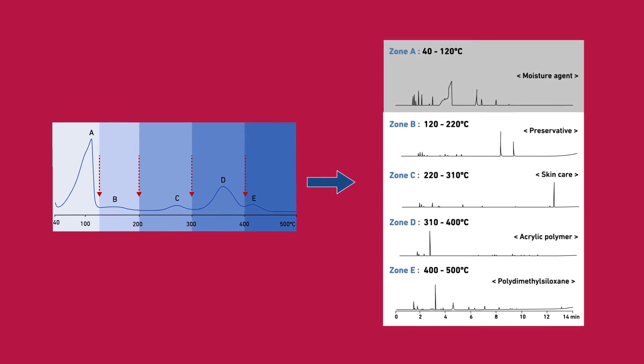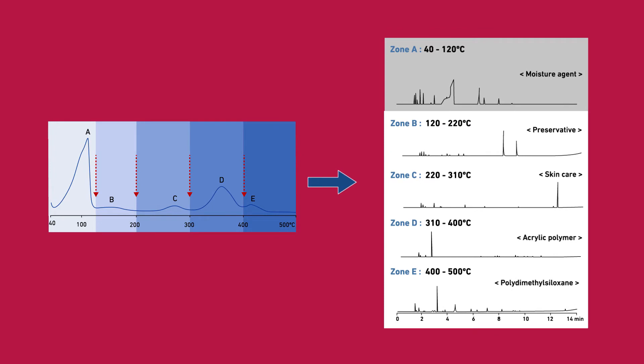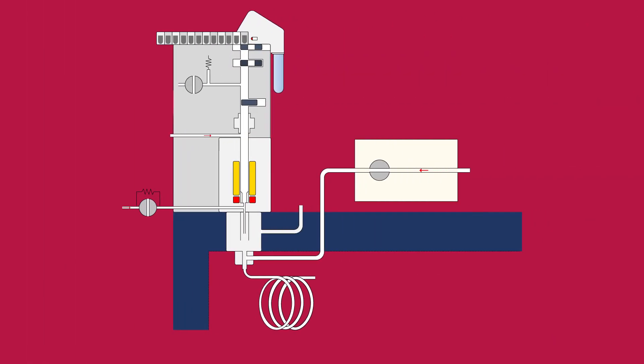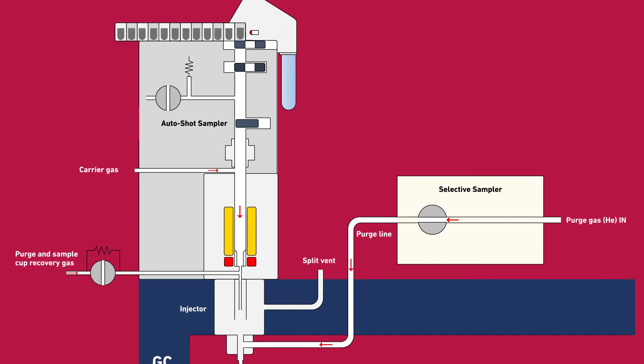First, the microfurnace is heated to 40 degrees Celsius as programmed. This temperature was obtained from our EGA thermogram zone A. Then, the sample cup drops into the microfurnace. The microfurnace temperature reaches 120 degrees Celsius while the sample cup stays in the furnace. Then the microfurnace starts to cool down.